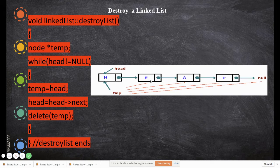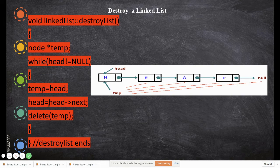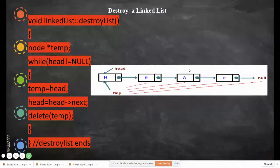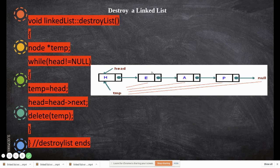We go back inside the while loop and check whether head is equal to null — it is not. So again, we make temp point to head, then move head to point to the next node. Temp is pointing to the current node and head is pointing to the next. We then delete the node pointed to by temp. Now we check again whether head is equal to null — it is not.